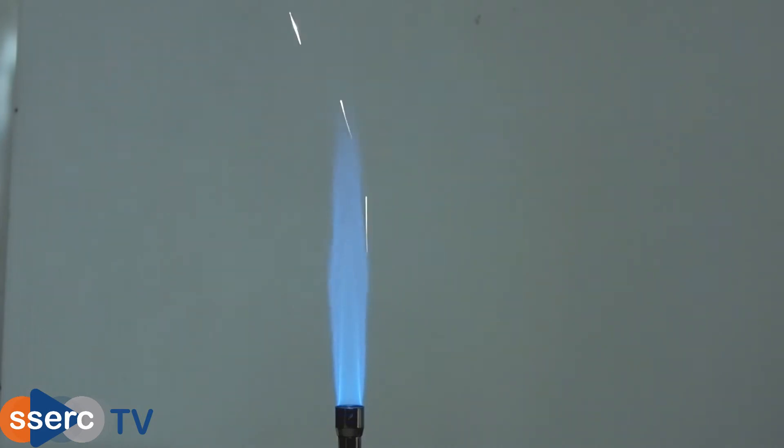If you sprinkle powdered iron into a bunsen burner flame you'll see a series of bright sparks as the small particles of iron burn. This is used in quite a lot of fireworks.